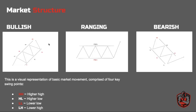These three basic market movements are comprised of four swing points. Let's identify the three basic market movements. First, we have a bullish sentiment, referred to as an uptrend — it's when price is printing a series of higher highs and higher lows. Then we have a ranging market, when price is printing equal highs and equal lows — essentially support and resistance levels where price doesn't really have a direction and is just moving sideways.